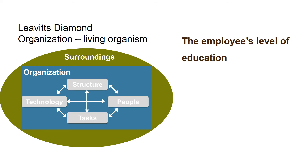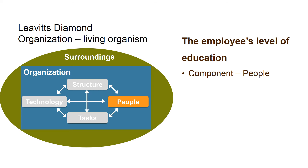The employees' level of education is part of the component People. The level of education affects both the component Tasks and the component Structure. The higher the education level of the employees, the more complicated tasks and responsibilities we can give them, and this has an impact on how decisions should be made, which is determined in the component Structure.